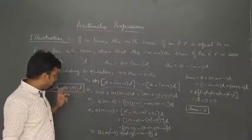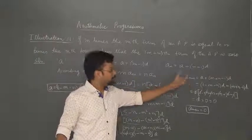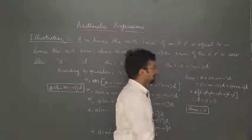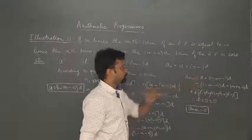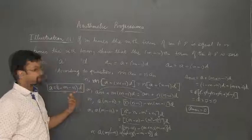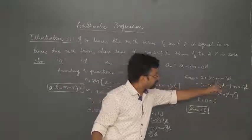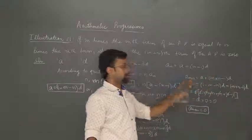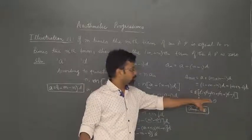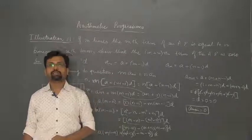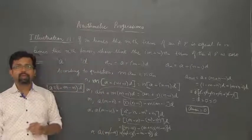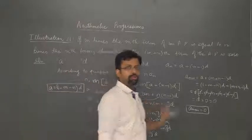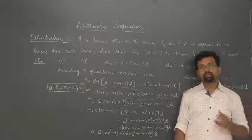Once we have the relation between a and d, we write the (m+n)th term: a plus (m plus n minus 1) into d. We substitute the value of a obtained earlier — [1 minus (m plus n)] into d — and retain the remaining term. Taking d as common, all terms inside the bracket cancel out, giving d into 0 which equals 0. So we have shown the (m+n)th term equals 0 when m times the mth term equals n times the nth term. This is an important question that has appeared in previous board examinations.